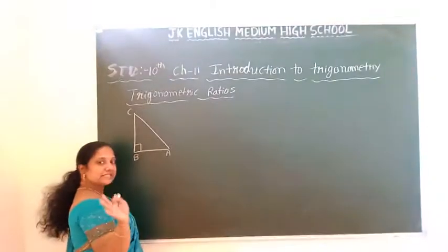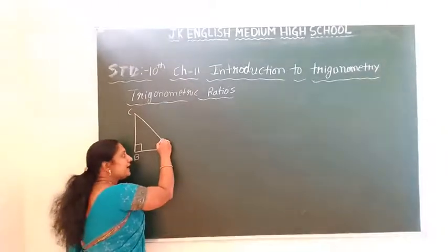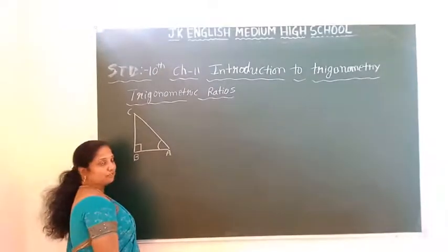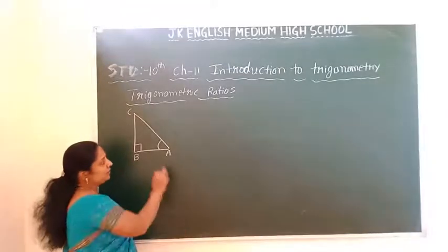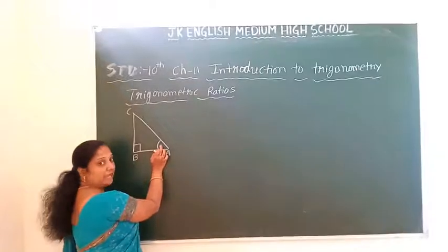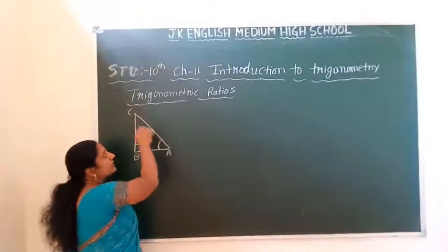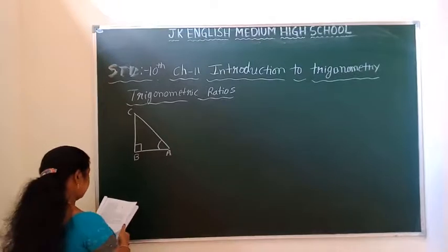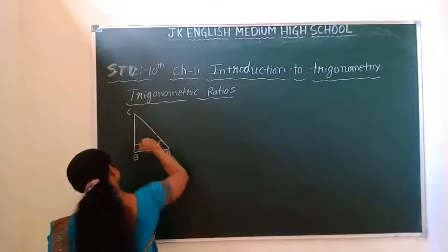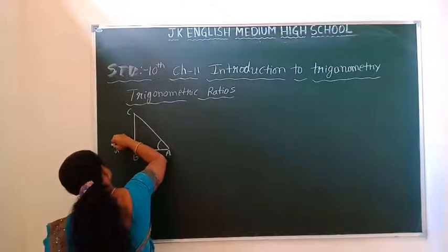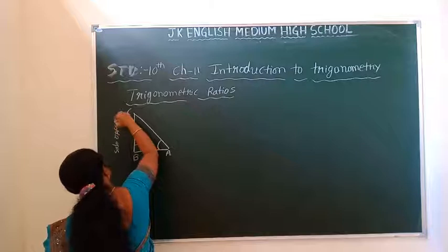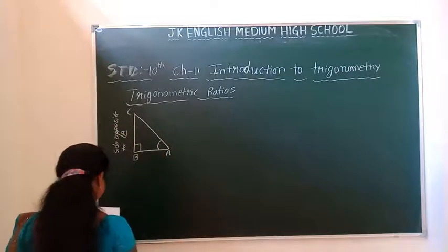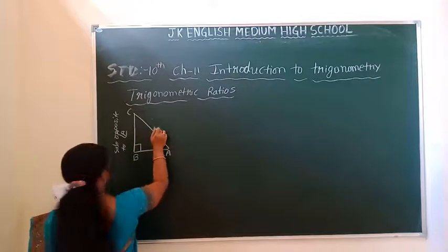So these two angles will be less than 90 degrees. I am going to consider angle A as an acute angle. Depending upon these two angles, we are going to write the trigonometric ratios. This is the acute angle. If this is acute angle A, then exactly opposite to angle A is called the opposite side of angle A — that is, side opposite to angle A.